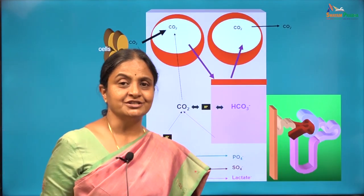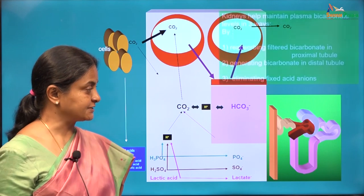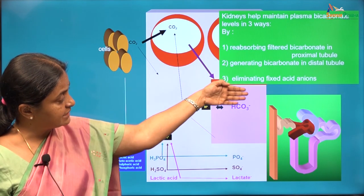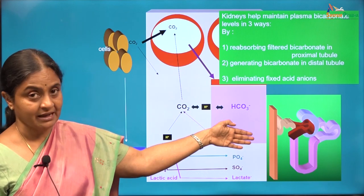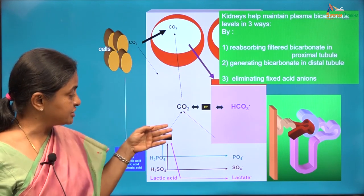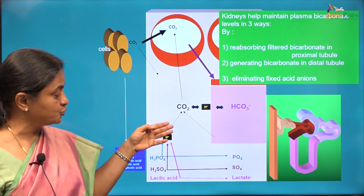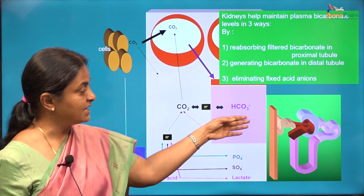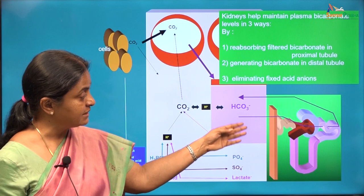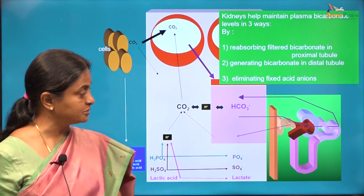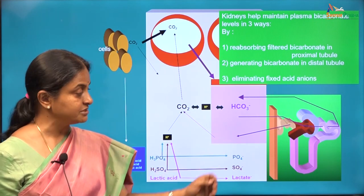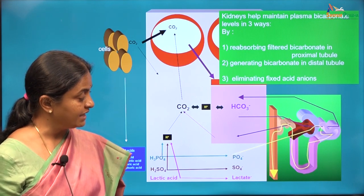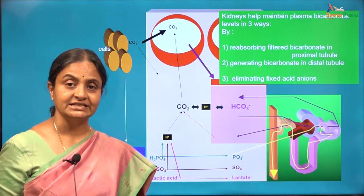This has been a long session. Kidneys help maintain plasma bicarbonate levels to buffer the protons released by fixed acids in three ways: reabsorption of bicarbonate in the proximal tubule, generation of bicarbonate in the distal tubule, and elimination of the fixed acid anions.